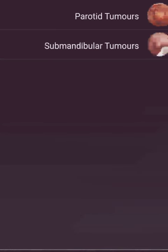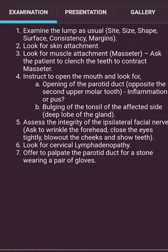Now I will discuss salivary gland tumors. First, the parotid tumor. Examine the lump as usual: site, size, surface, consistency, and margin. Look for skin attachment and muscle attachment — ask the patient to clench the teeth to contract the masseter. Instruct the patient to open the mouth and look for the opening of the parotid duct — opposite the second upper molar tooth — for inflammation. Also look for bulging of the tonsil on the affected side, indicating the deep lobe of the gland.